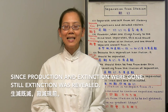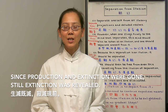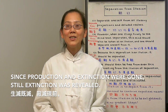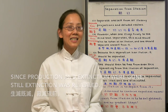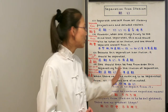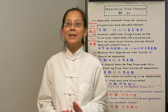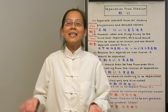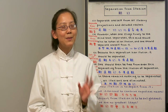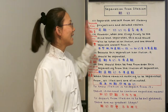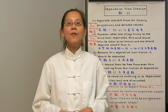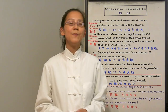Since production and extinction were gone, the still extinction was revealed. Still extinction is when there is no illusion to be eliminated — that's our perfect enlightenment. That's how Guanyin Bodhisattva became enlightened, through this process of separating from illusion.